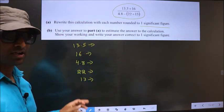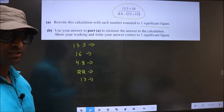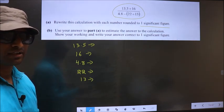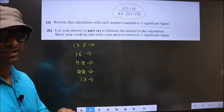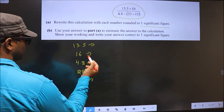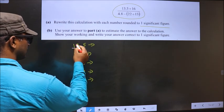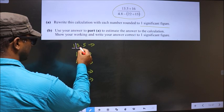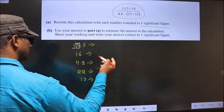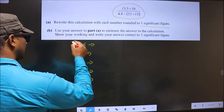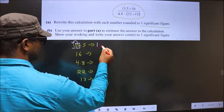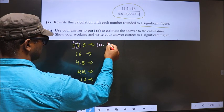Now we should round each number to one significant figure. To do that, we should look at the second significant number starting from this side. So first significant number is this. This is the second significant number which is 3. 3 is less than 5 so we don't need to add any number to this. So 1 will remain as it is and 0 in the rest of the places.